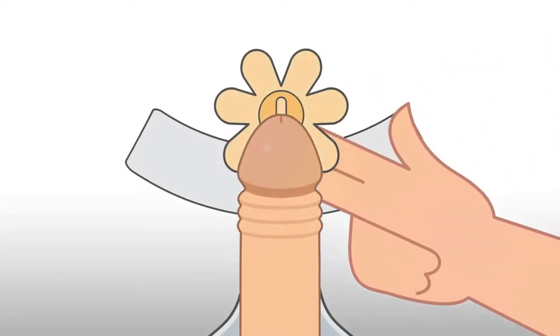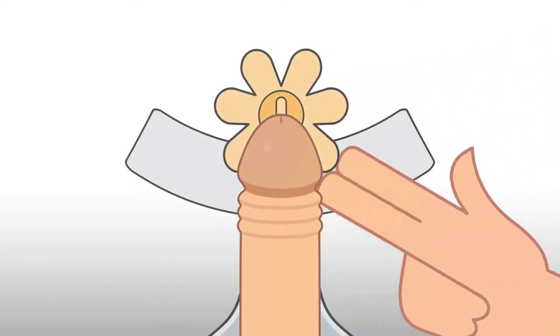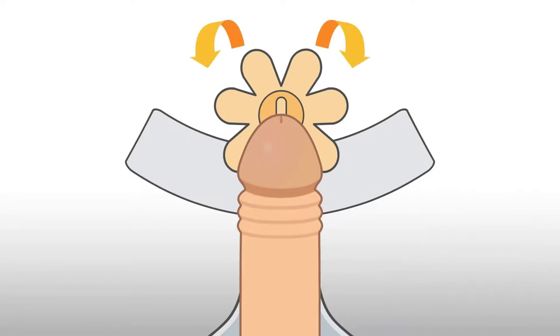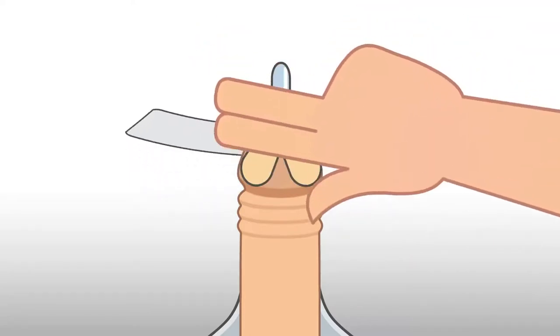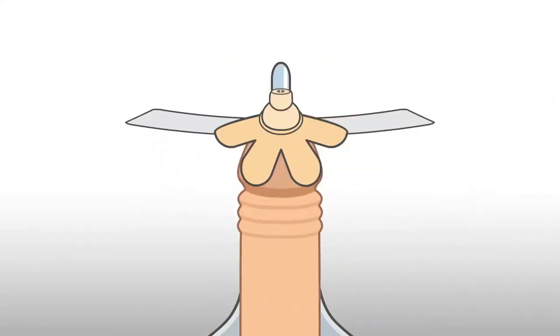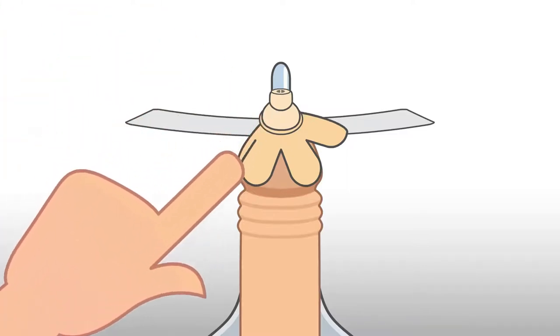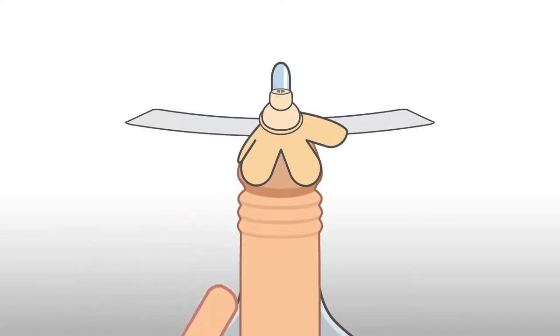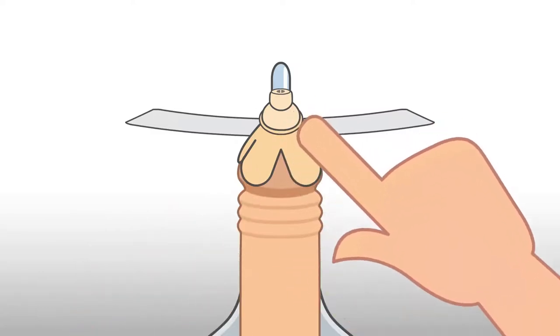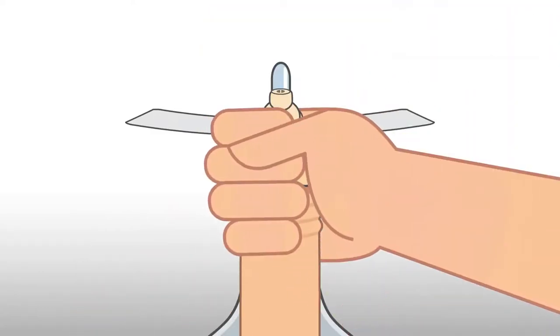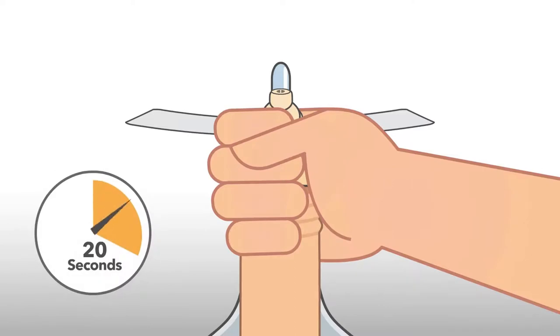Some men find it easier to begin by pressing in the bottom petal and then rolling the product up and onto the head of your penis. This should help make sure everything is lined up properly. One by one, press the rest of the petals down over the head of your penis, overlapping as needed. Hold the petals to your skin for 20 seconds.